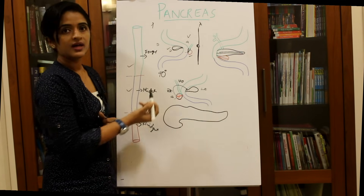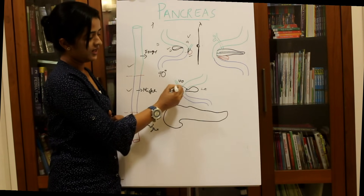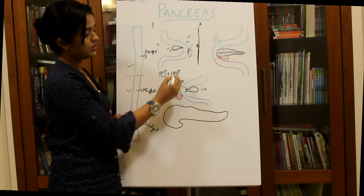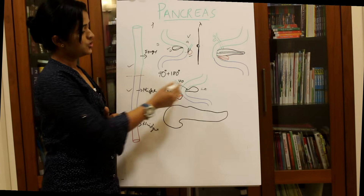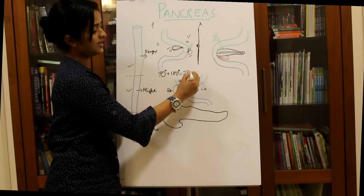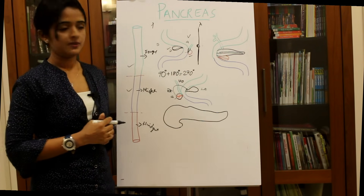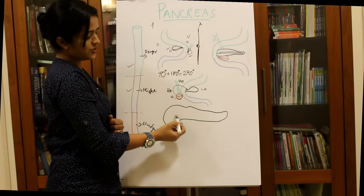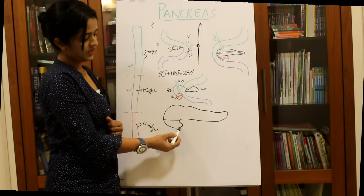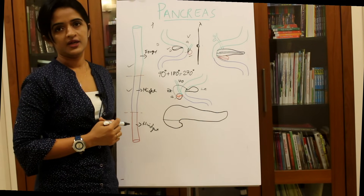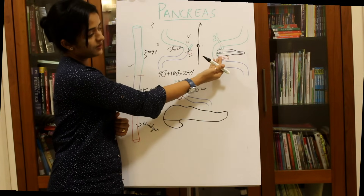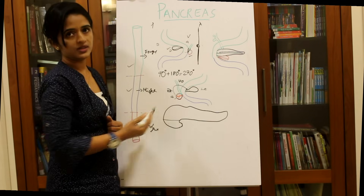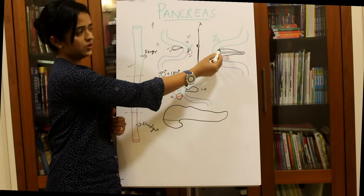From the anterior aspect to the right, the ventral bud covers 90 degrees of rotation. From the right position, it then covers a further 180 degrees along the posterior aspect of the duodenum to reach the dorsal bud — so 90 plus 180 equals 270 degrees total rotation by the ventral bud. The dorsal bud forms the major portion of the pancreas except the lower part of the head and uncinate process, while the ventral bud forms the lower portion of the head and the uncinate process.